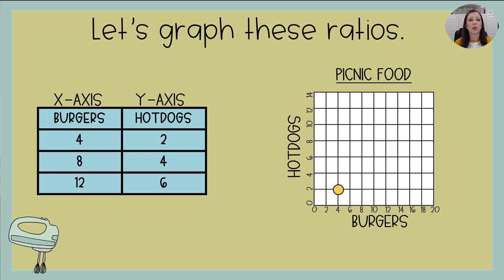So the next one is eight burgers and four hot dogs. So I'm going over eight spaces on burgers. And then I'm going up four spaces on hot dogs. And so that one goes there. And last but not least is 12 to six. So to the right, 12 spaces up to the six. It's going to go right there.